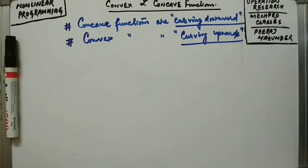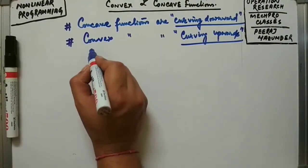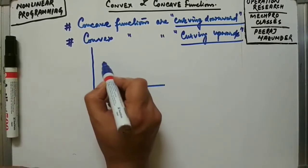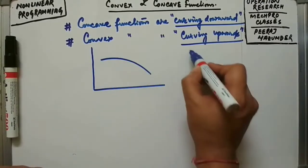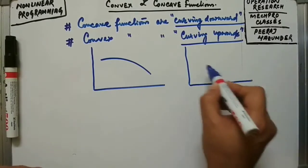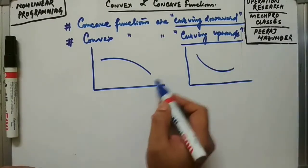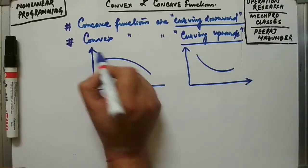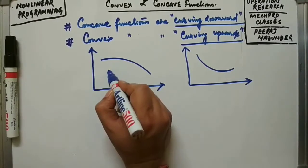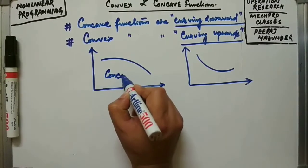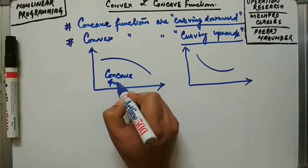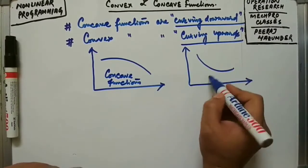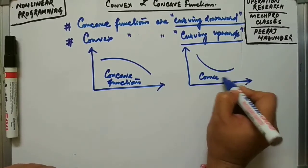If I plot these convex and concave functions, they will look somewhat like this. This shape here represents concave functions, and this shape represents convex functions.